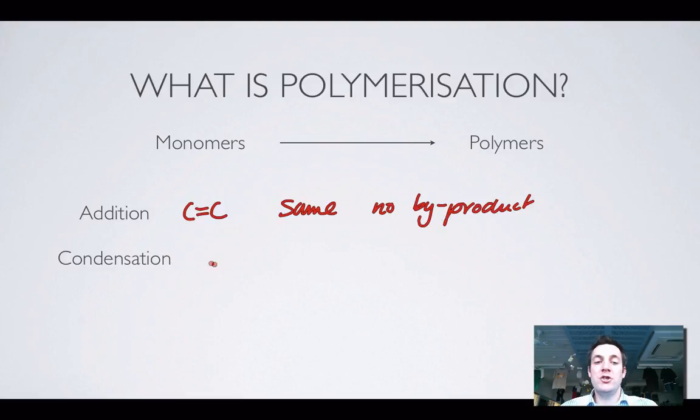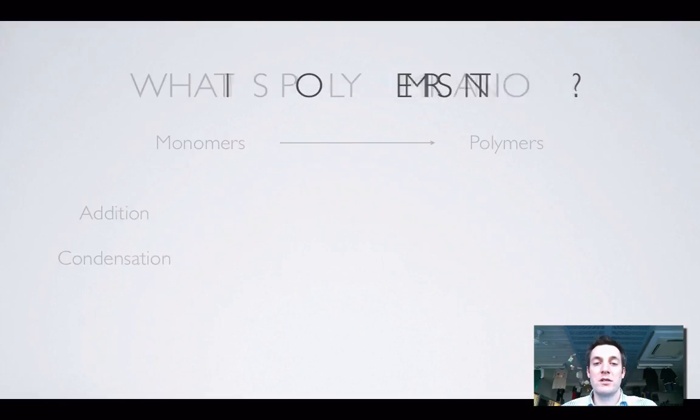With condensation we're going to use an alcohol and we're going to use a carboxylic acid. So in other words we're using monomers which are different to one another, and there is a by-product with creating water like we do in any condensation reaction between an alcohol and a carboxylic acid. So there's some important differences between the two types of polymerization there.